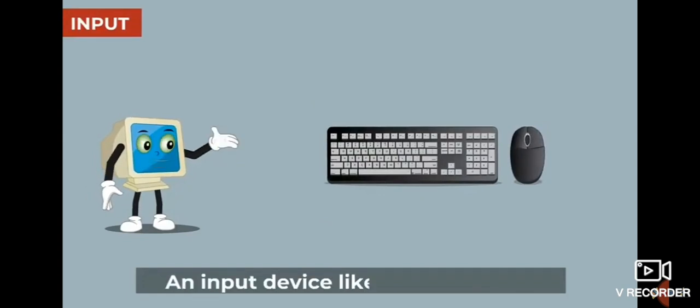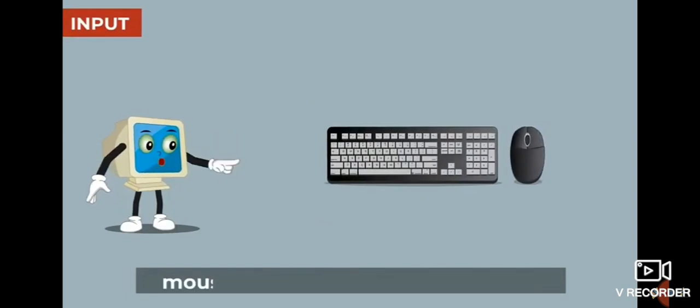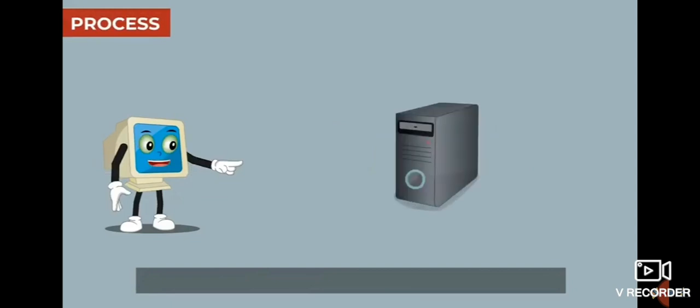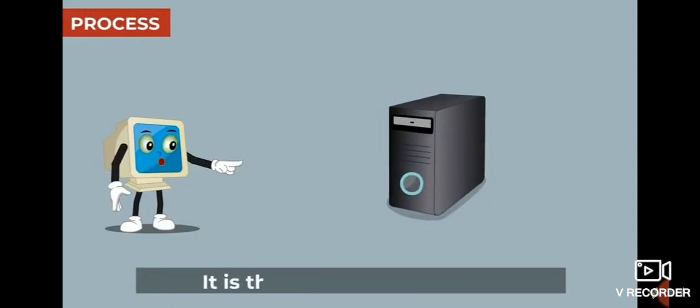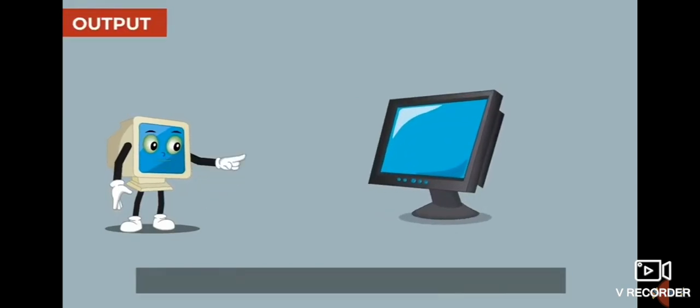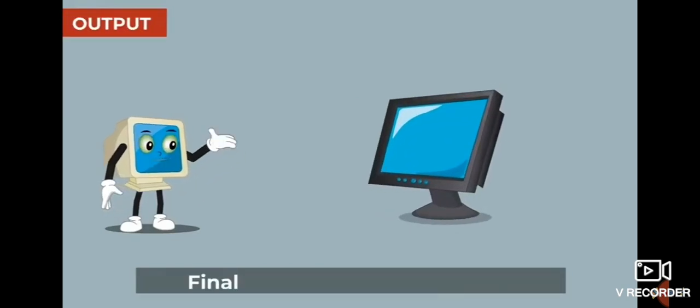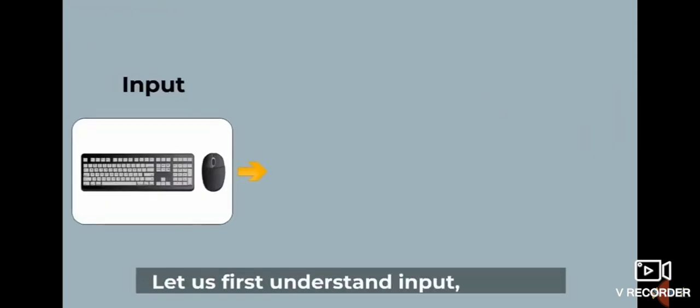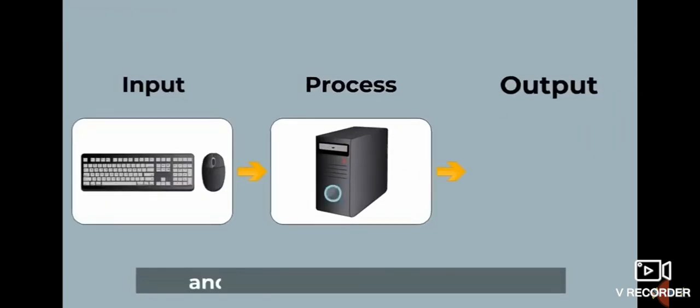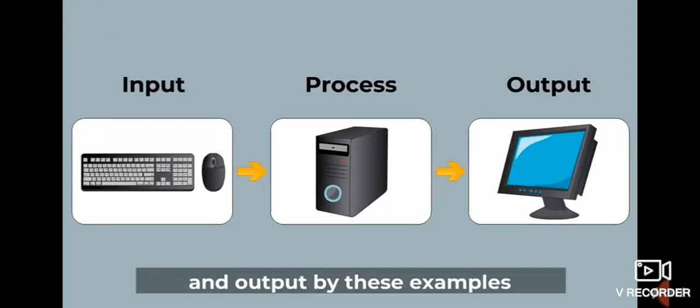Input. An input device like keyboard and mouse provides instructions to the computer. Process. It is then processed by CPU. Output. Finally, the output is displayed on monitor. Let us first understand input, process, and output by these examples.